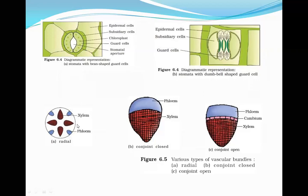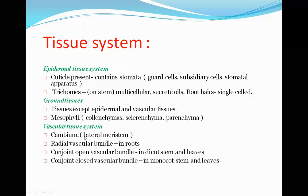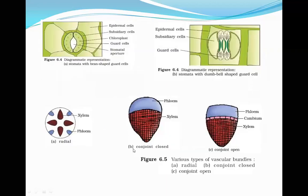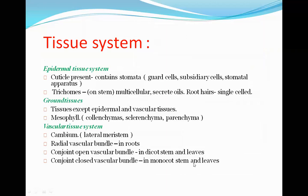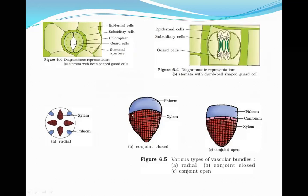In the radial vascular bundle diagram, you can see the circular arrangement — the red is xylem and the blue is phloem arranged in a circular manner in the roots, hence called radial vascular bundle. In the conjoint closed bundle, there is no cambium between xylem and phloem — they are directly attached to each other, hence 'closed,' observed in monocot stem and leaves. In the conjoint open bundle, there is a layer of cambium between xylem and phloem, hence 'open,' observed in dicot stem and leaves.